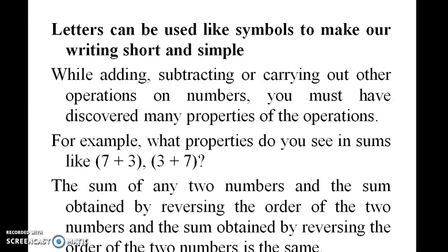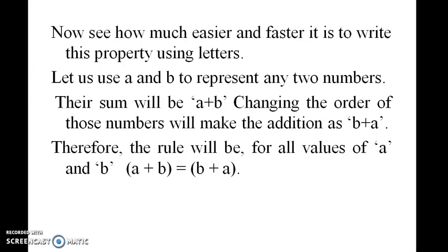For example, what property do you see in the sum? Like 7 + 3 and 3 + 7. Now see how much easier and faster it is to write this property using letters. Let us use a and b to represent any two numbers. Their sum will be a + b. Changing the order of those numbers will make the addition b + a. Therefore, the rule will be, for all values of a and b: (a + b) = (b + a).